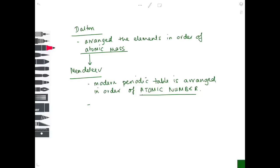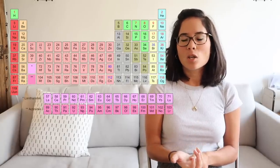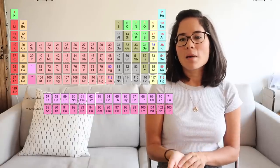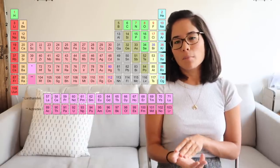Mendeleev is considered the father of the periodic table because he left spaces for undiscovered elements, whereas other scientists assumed all elements had been found. He predicted both the properties and positions of undiscovered elements. When using the periodic table, check the key — generally the top number is the mass number and the bottom is the atomic number, which is the number of protons.